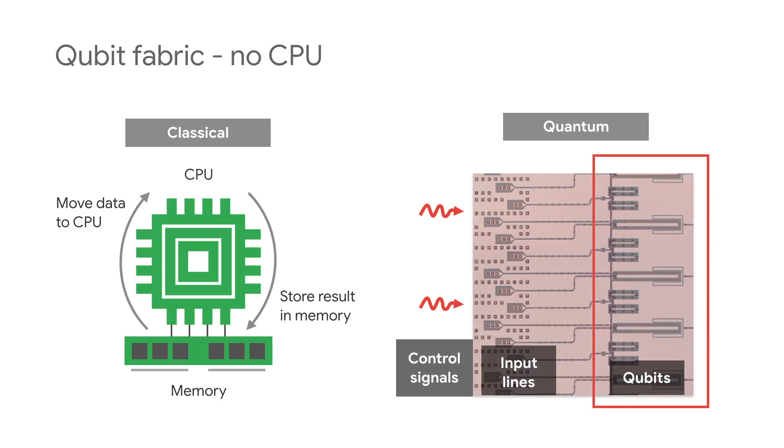In quantum computing with superconducting qubits, we can't afford the errors that would come from moving the data around. Instead, we build a grid of qubits, each one connected to its neighbors. The qubits stay put, and we do logic operations by sending control signals into individual qubits or pairs of qubits.